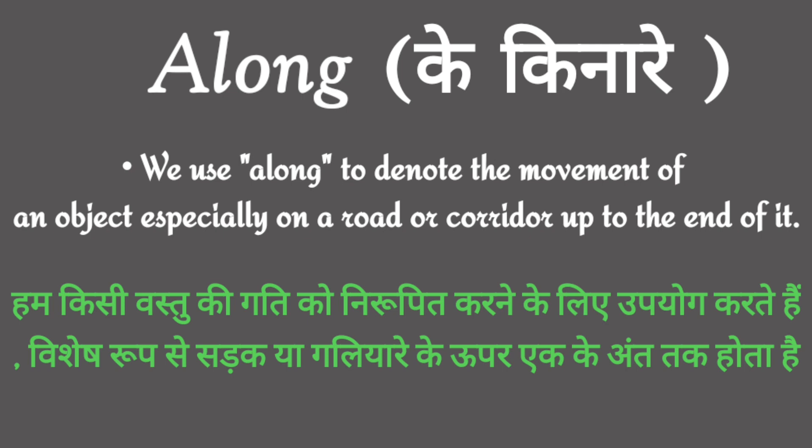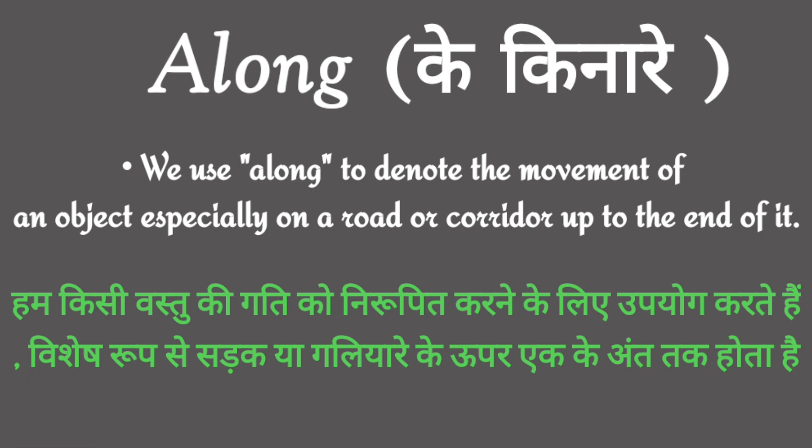Now let's see the use of Along. We use Along to denote the movement of an object — क्या चीज़ डिनोट करने के लिए? Object के movement को डिनोट करने के लिए, especially किस जगह पे? Road या corridor. अगर हिंदी में समझें तो, हम किसी वस्तु की गति को निरूपित करने के लिए Along का उपयोग करते हैं।